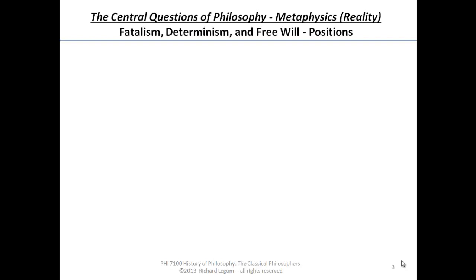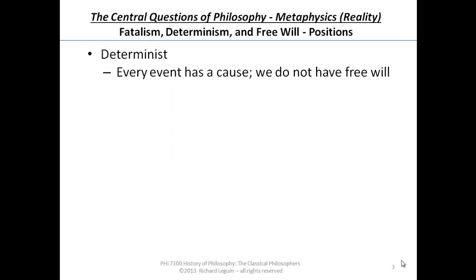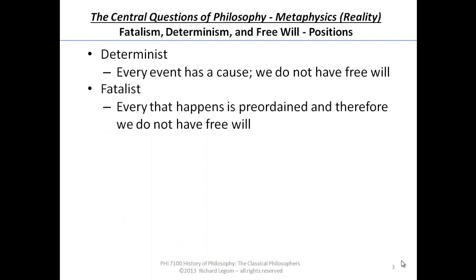When we looked at what this problem of philosophy is, or this central question of philosophy was, we saw that people took one of several positions. Two closely related positions were: determinism, which was that every event has a cause and we don't have free will. And people took that to lead to the conclusion of what we call a fatalist conclusion, or fatalism — that is, everything that happens is preordained, therefore we don't have any free will and there's nothing for us to do.